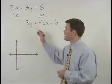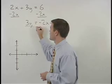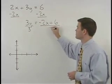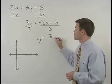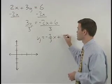Continuing on, to get y by itself, we would divide both sides by 3 to get y equals negative 2 thirds x plus 2.